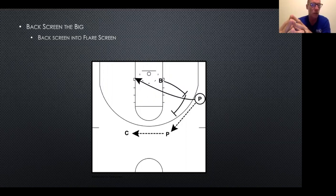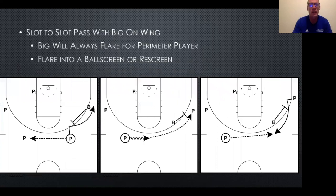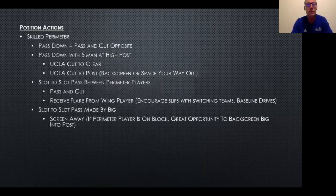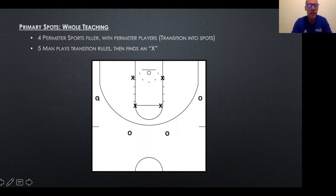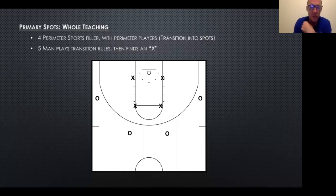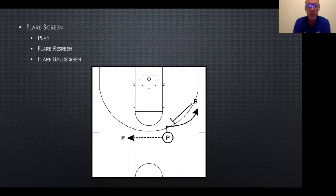They know they have to cut with purpose — they have to score. Going back to this very first diagram: even with a group of eight or twelve, I'd just start with these four spots filled with bigs, guards, whatever. All you can do is pass and cut. You'll be amazed how drastically your cutting and passing improves, and you'll figure out which kids really understand how to play the game.